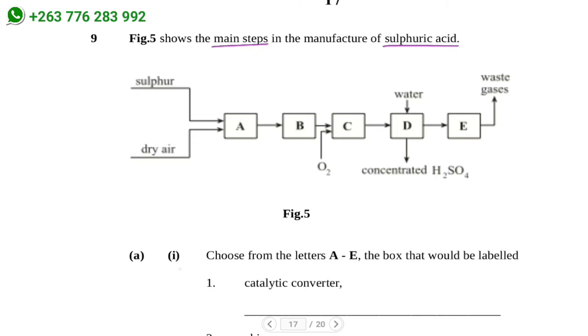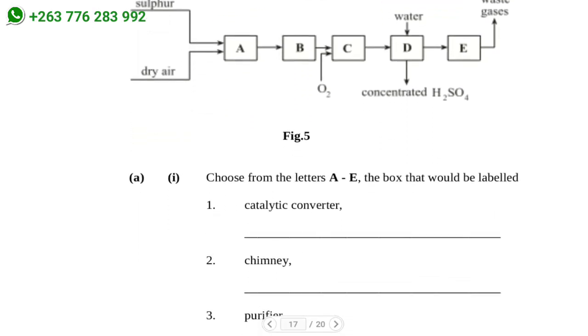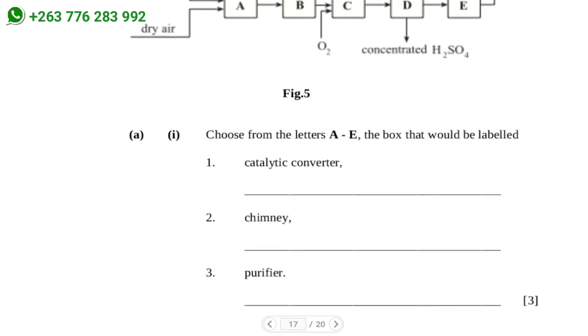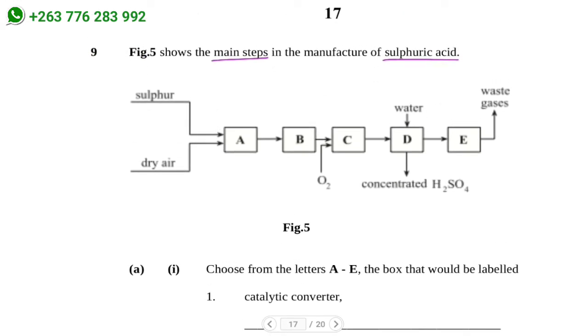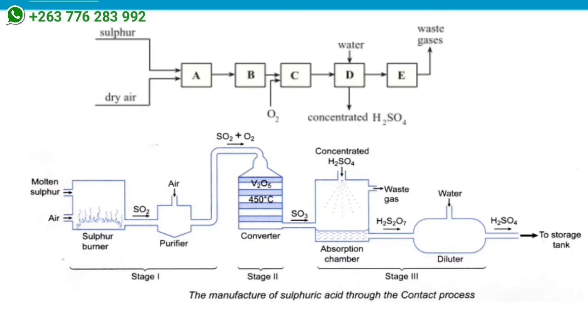The question asks: choose from the letters A to E the box that would be labeled: number one, catalytic converter; number two, chimney; and number three, purifier. So what we need to do is analyze the steps involved in the manufacture of sulfuric acid.